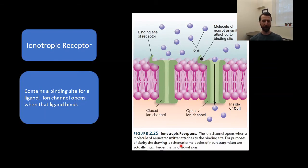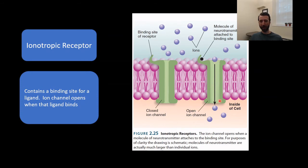How do ions get in or out of a cell? One way is through an ionotropic receptor — a receptor bound in the membrane of the neuron that contains an ion channel. It has both a binding site for a neurotransmitter and a channel that allows the passage of ions. When a neurotransmitter attaches to the binding site, it causes a conformational change in the protein, the channel opens, and ions flow through along their concentration and electrostatic gradients.